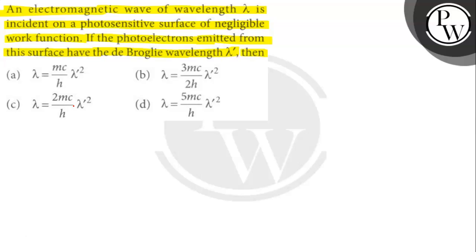We are given in the question an electromagnetic wave that has a wavelength of λ. This electromagnetic wave is incident on a photosensitive surface that has negligible work function. We are also said that the emitted photoelectrons have a de Broglie wavelength of λ'. Then we are asked to find the correct expression among the given options.